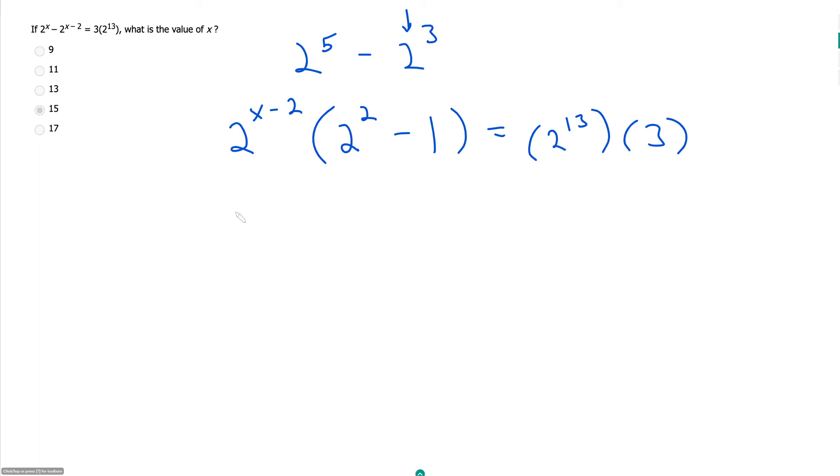So here now on the left side, I have 2 to the x minus 2 times, and this is what we wanted: 2 squared minus 1 is 3, and that is all equal to 2 to the 13th times 3.